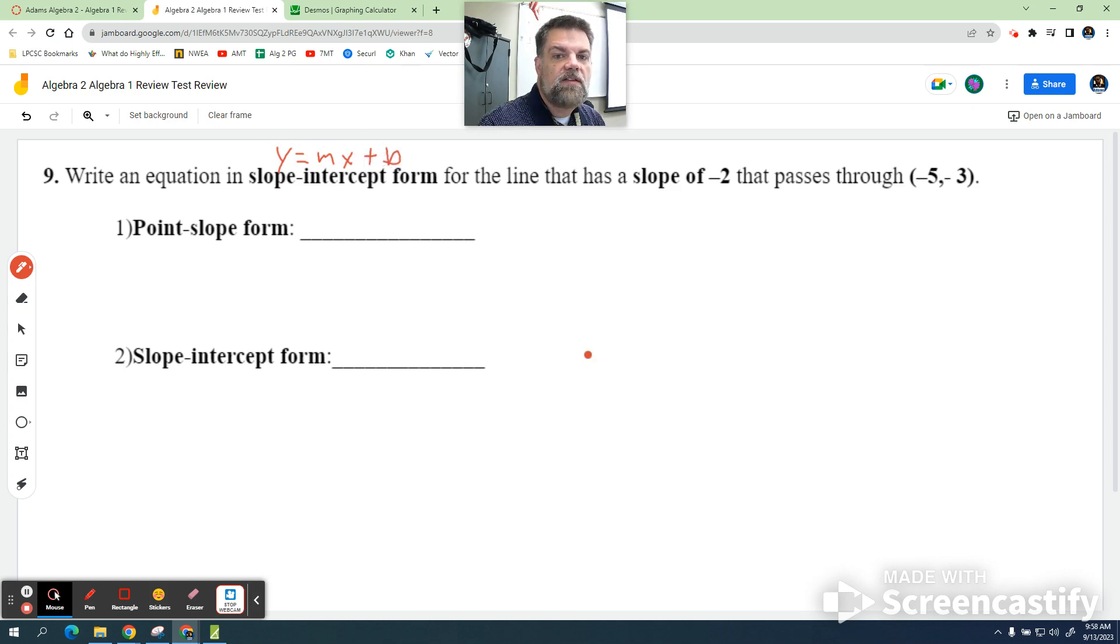Now it tells us, for the line that has a slope of negative 2, so I know that m equals negative 2, and passes through the point x sub 1, y sub 1. In other words, x sub 1 equals negative 5, y sub 1 equals negative 3.